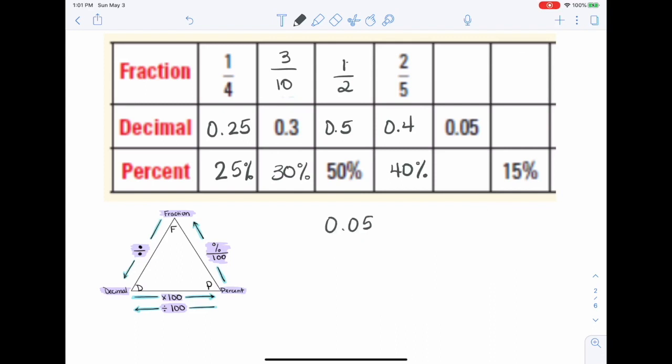0.05. Ahora, de decimal a porcentaje, tengo que mover el decimal nomás. Uno, dos, y esto va a ser 5%. If I have the percent, para cambiarlo a fracción, I just take the number over 100 and simplify. So, 5/100. Esto se puede dividir entre cinco y termino con 1/20 as my fraction.